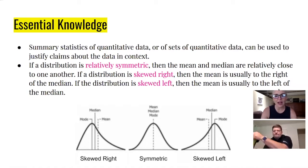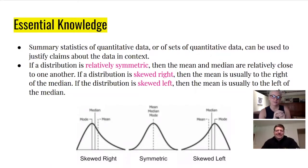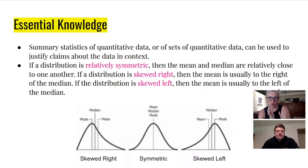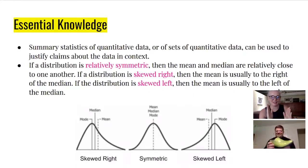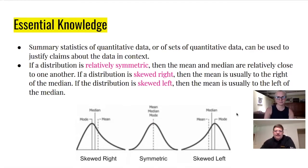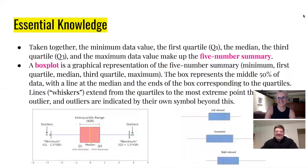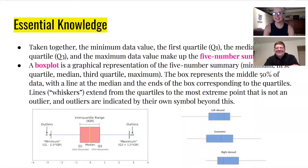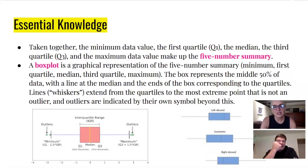Just as a reminder, when you're looking at a graph you can determine its shape by its tail. The mean is going to follow that tail, so if the graph is skewed left, the mean will follow to the left. If it's skewed right, the mean will be to the right of the median. If it's symmetric, they're all about the same — that was the old grandma story.